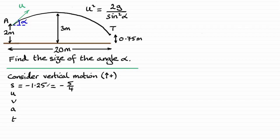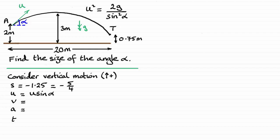I find it easier to work with fractions than decimals. The initial upward component of velocity u is u sinα — it uses sine when resolving in the vertical direction. The final vertical velocity at T is unknown, so I'll leave that blank. The acceleration due to gravity acts downwards throughout, so a = −g. The time to reach point T I'll call t.